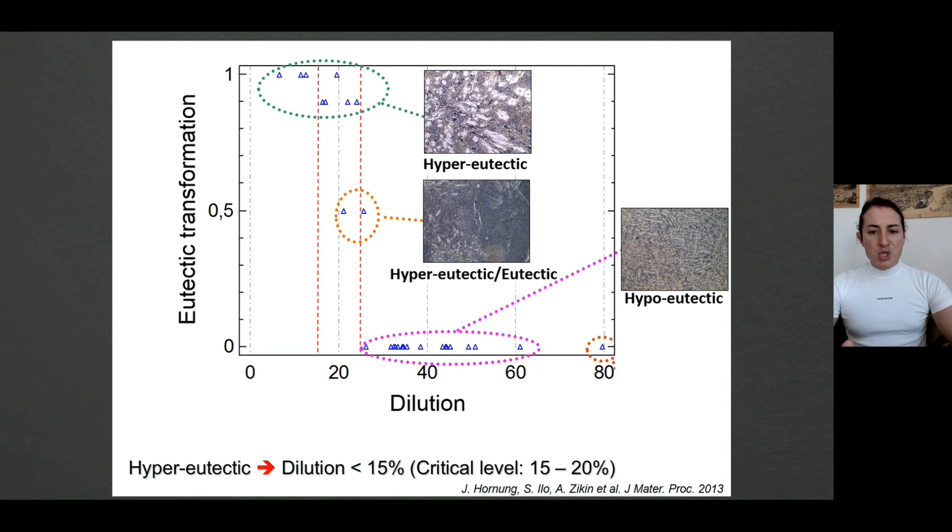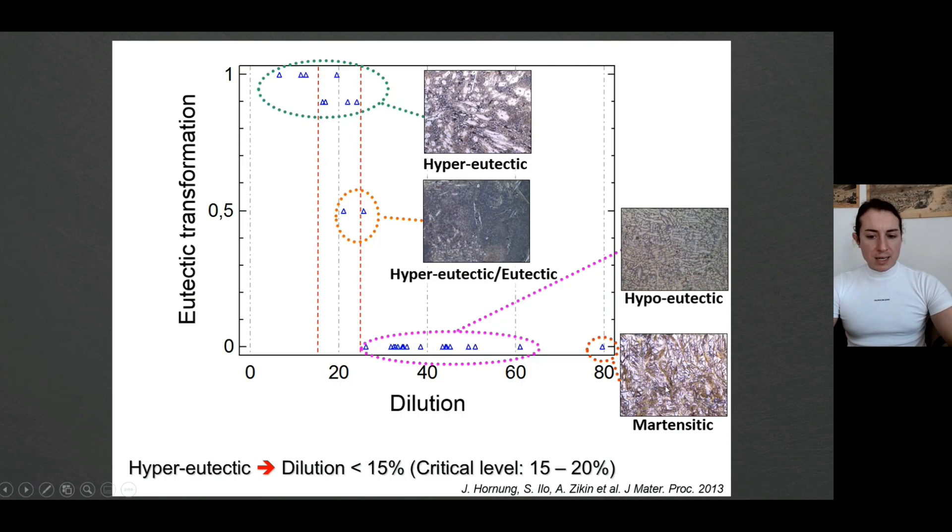I have not to mention that the hardness difference between the first and the third microstructures is around a factor of two, which hypoeutectic definitely poses a lower hardness, and finally with very high dilution we could end up with martensite.